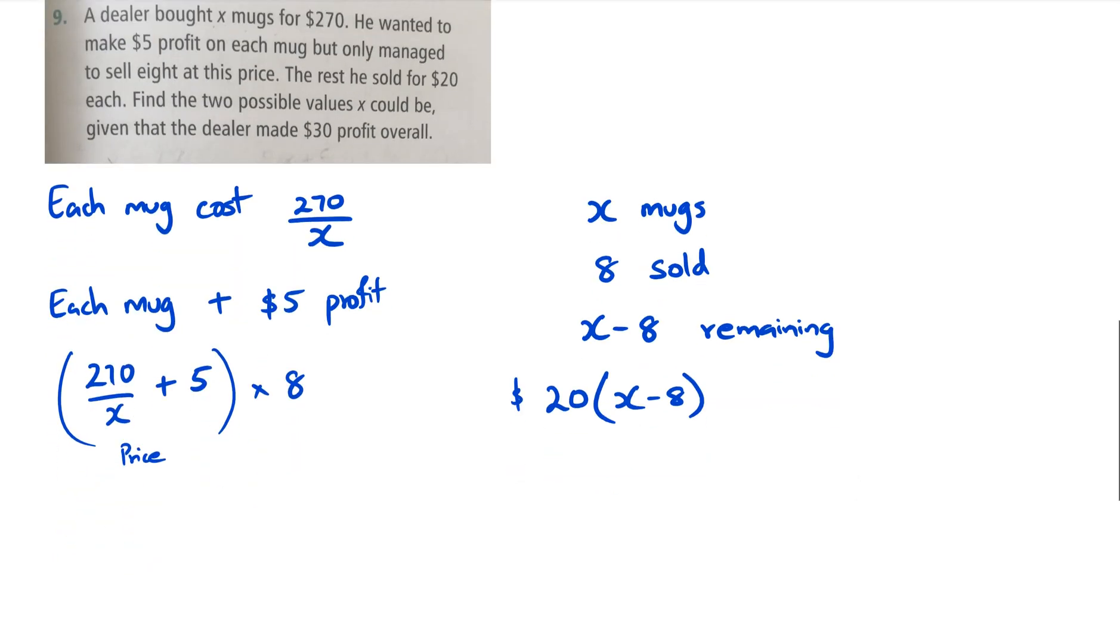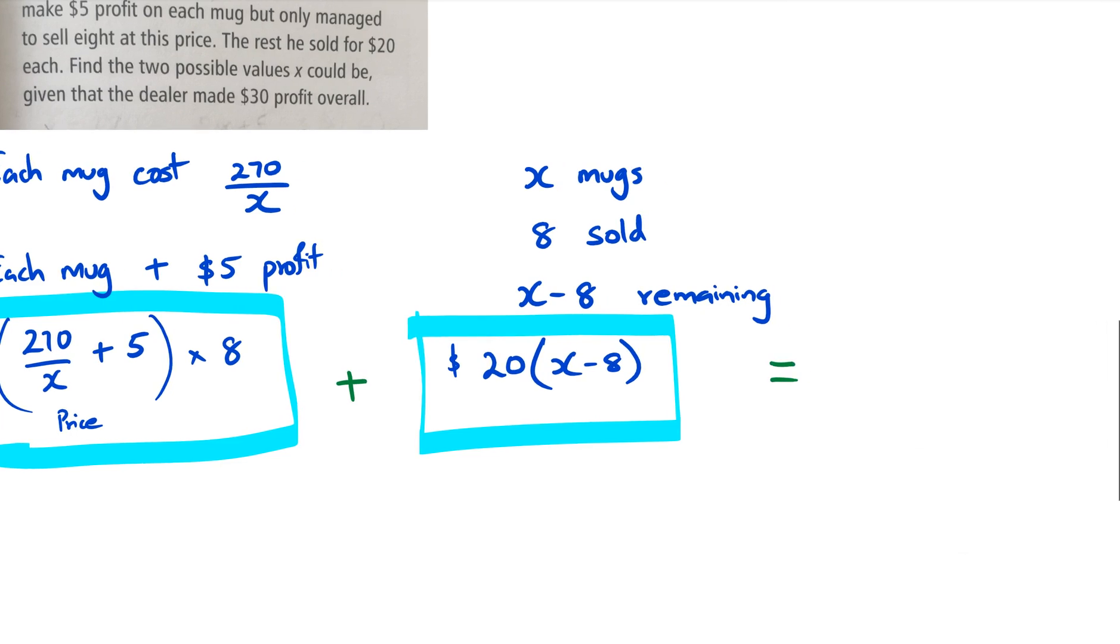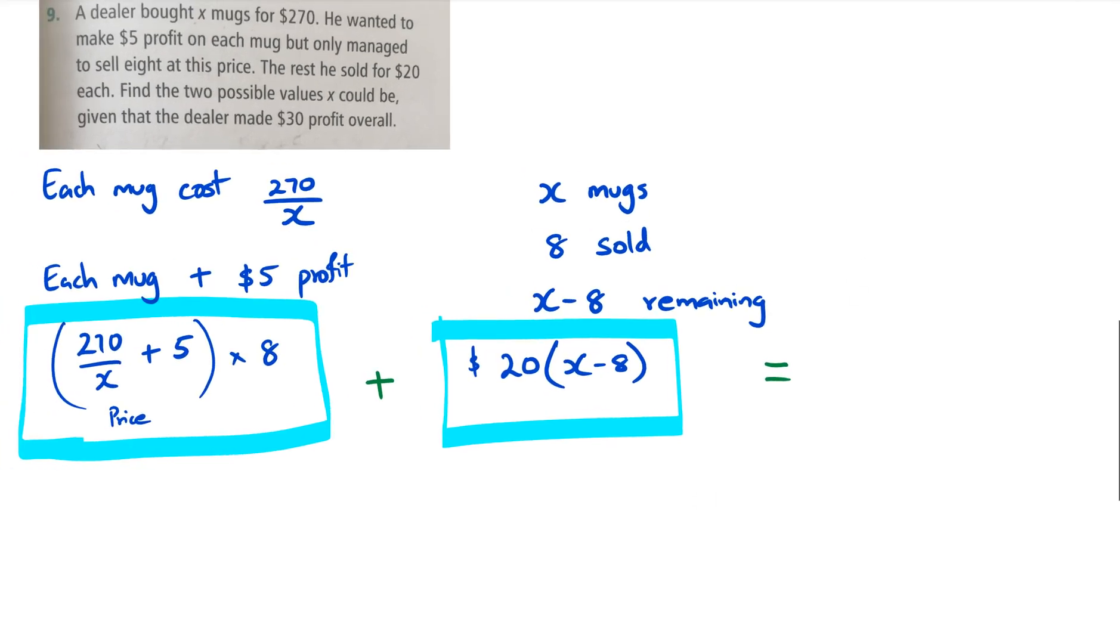It says find the two possible values of X given that the dealer made $30 profit overall. Whatever he sold those eight mugs for plus the remaining mugs he sold for $20 adds up to $30 profit. If he made $30 profit, that means he sold everything for $300 total, because he spent $270 and made $30 profit.